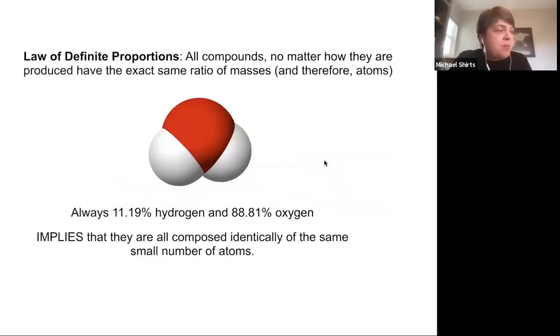So law of definite proportions is just a statement that all compounds, no matter how they're produced, they have the exact same ratios of masses and therefore by logic, eventually atoms. For example, water, before they even knew anything about what a water molecule looked like, it was always 11.19% hydrogen and 88.81% oxygen before doing careful measurements with combustion and breaking things apart. But that's not immediately obvious.